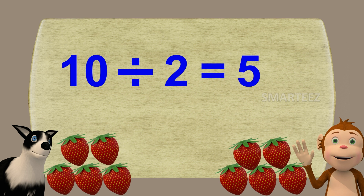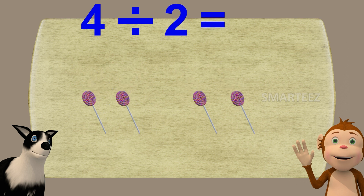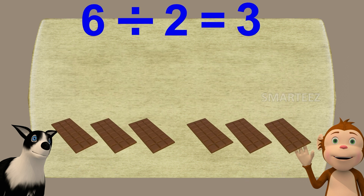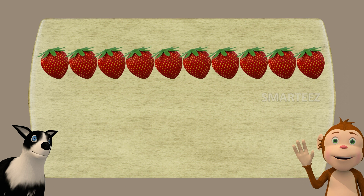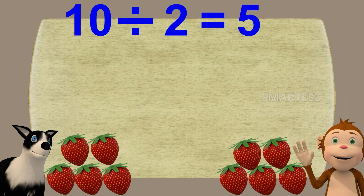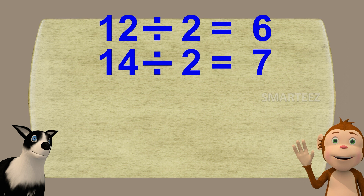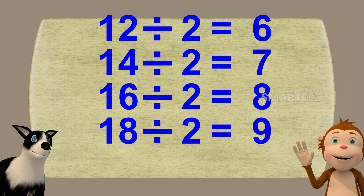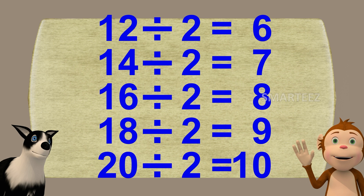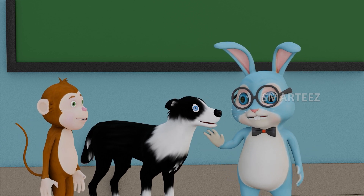Okay, let's check out what we did again. We divided all items between the two of you. We had four candies and divided them into two each. We had six chocolates and divided them into three each. We had eight apples and divided them into four each. We had ten strawberries and divided them into five each. We can continue: twelve divided by two is six, fourteen divided by two is seven, sixteen divided by two is eight, eighteen divided by two is nine, twenty divided by two is ten, and so on. Now Byra and Rangu, enjoy your fruits, candies, and chocolates. See you soon!